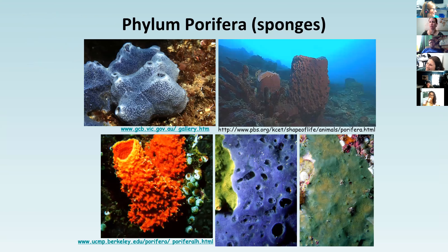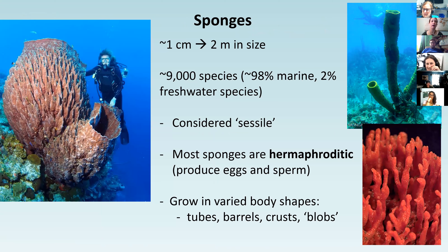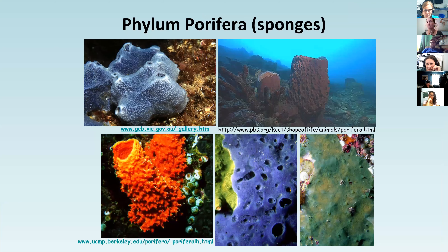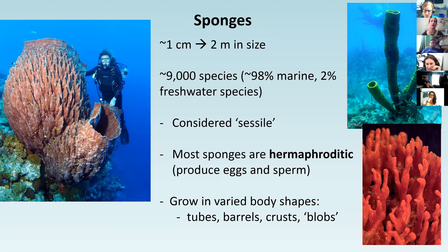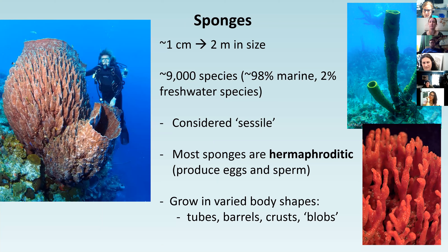The next phylum is Porifera - many pores - that's how you can think of sponges. There are a lot of different types, from tiny encrusting forms on rocks to meters in size. They are mostly marine, not many freshwater sponges. They are sessile, meaning they don't move. Most are hermaphroditic, meaning they have eggs and sperm - both male and female parts. They grow in a variety of body shapes: tubes, barrels, crusts, and all kinds of different forms.